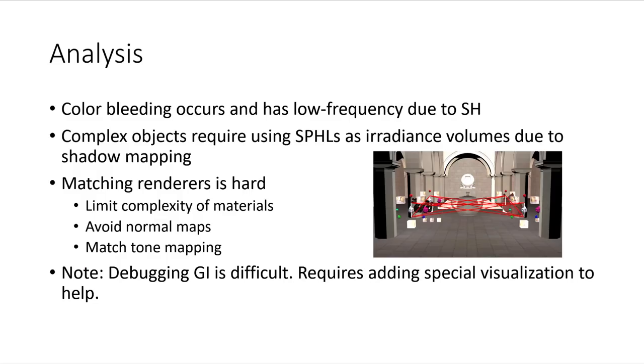So when we analyze our images, we do get desirable properties such as color bleeding and low frequency ambient light. However, we do know that complex objects have areas that are not visible to the SPHL. But the biggest challenge was matching our renderer to the path tracing renderer. The best thing you can do right now is to limit the complexity of materials, avoid normal maps, and rely on polygon normals only, and try to match tone mapping. In other words, find a lowest common denominator. We mentioned earlier that we do not reverse tone map texture maps, but Corona renderer does, and this causes our textures to look brighter than they ought to. We are addressing this in a future version of our 3D engine.